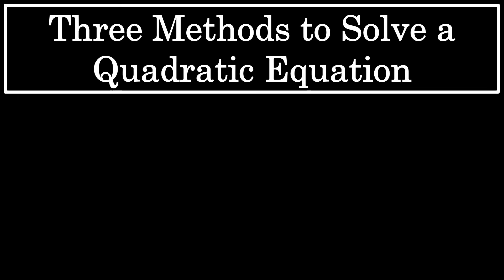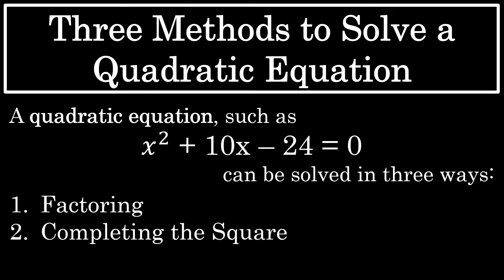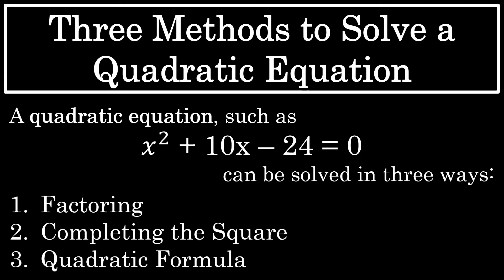A quadratic equation is an equation where the highest power on the variable is 2. A quadratic equation will have two solutions. A quadratic equation, such as x squared plus 10x minus 24 equals 0, can be solved in three ways: factoring, completing the square, and the quadratic formula.